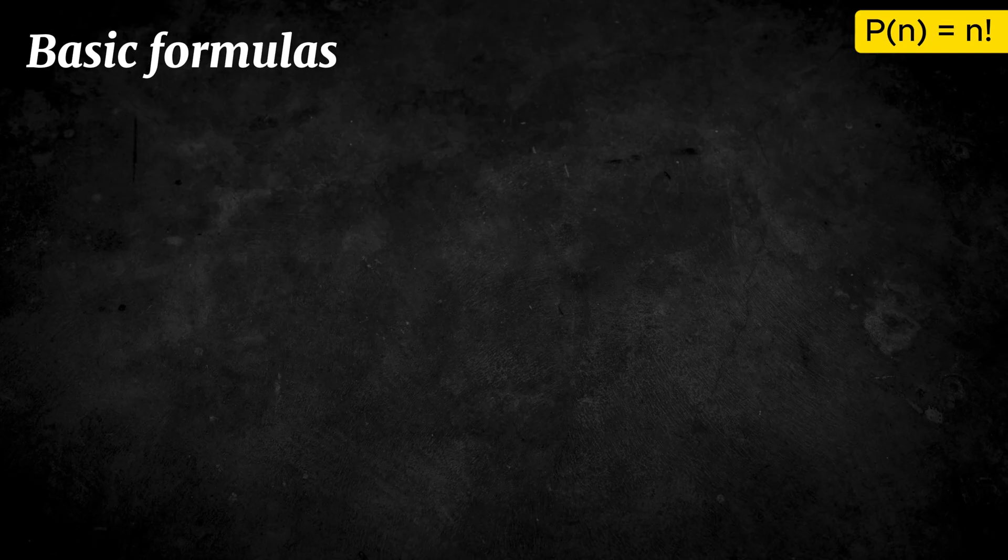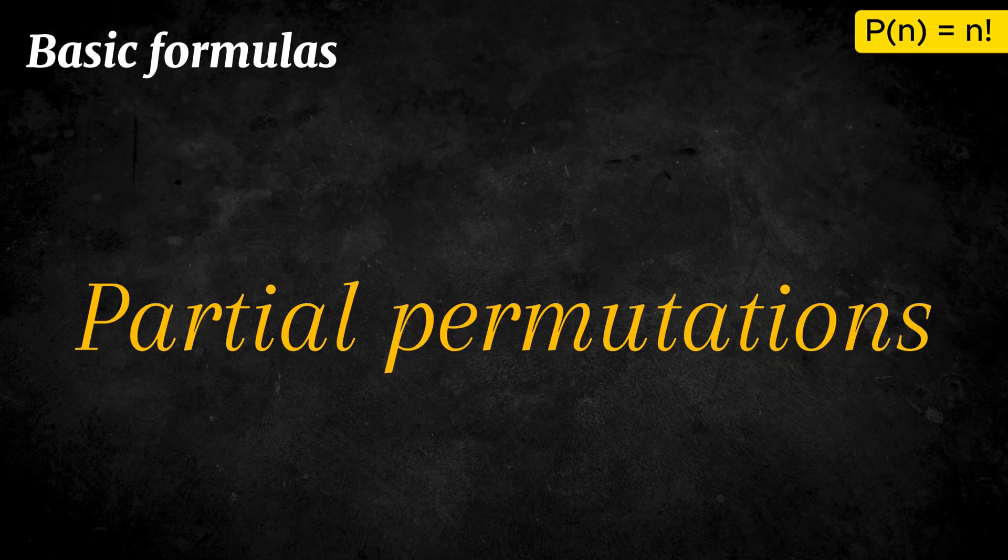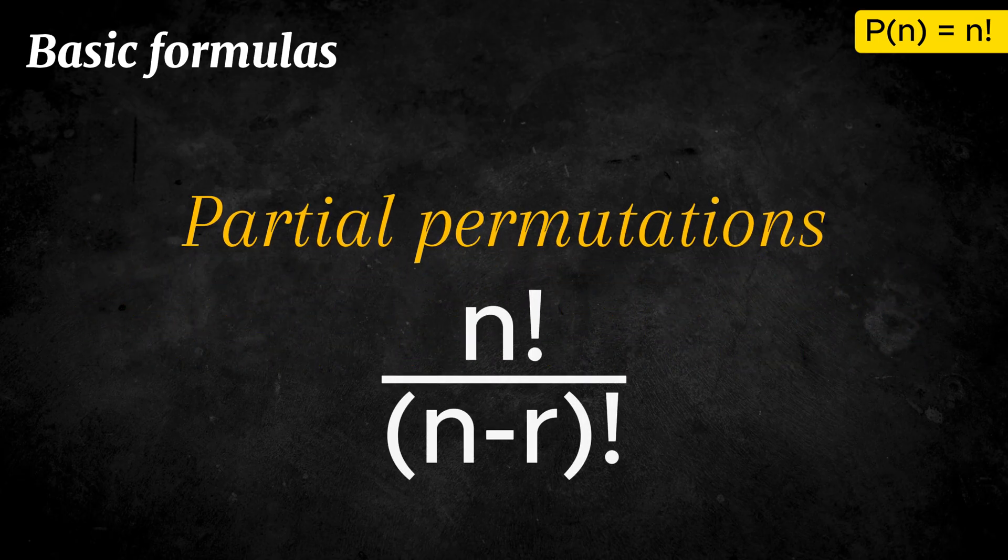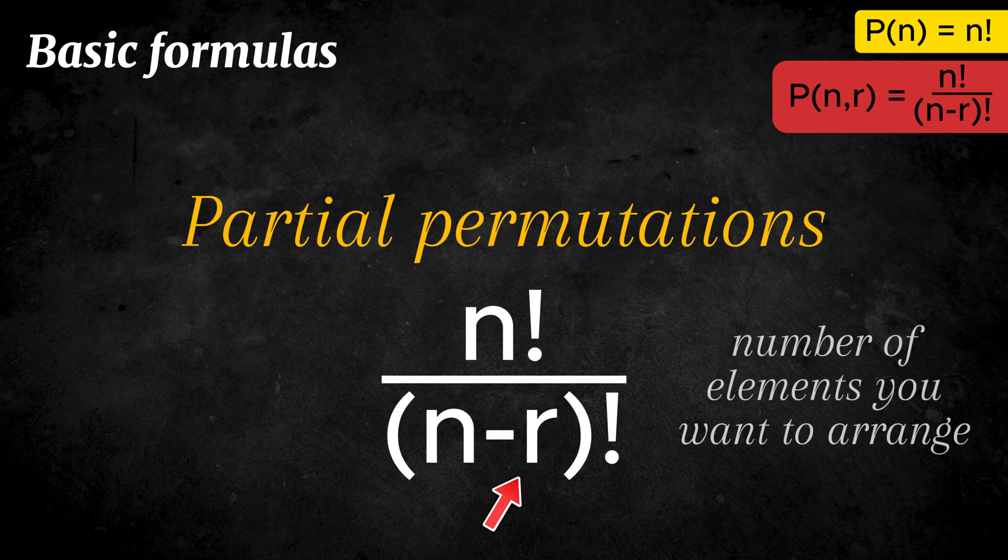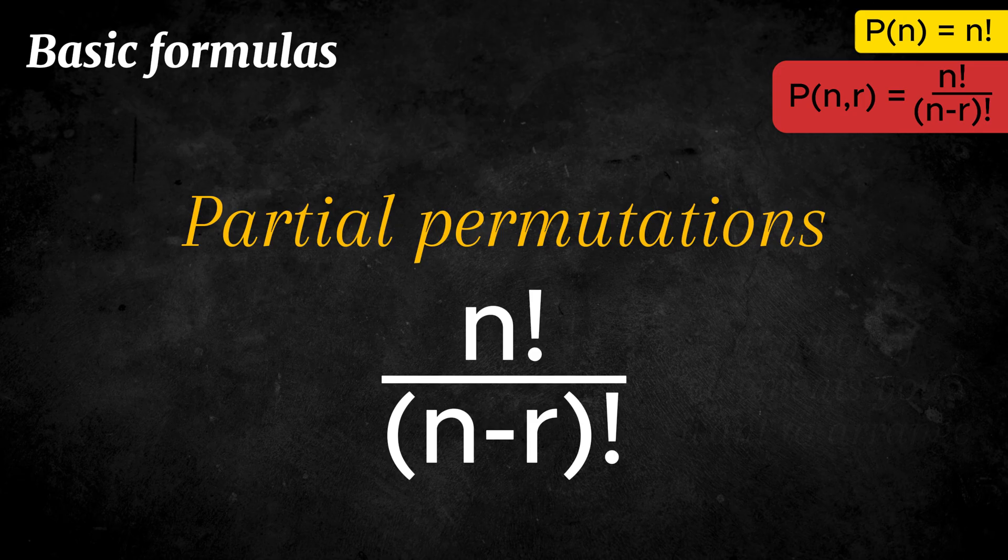If you only want to arrange some of the objects and not all of them, then you use the formula for partial permutations, which is n factorial divided by n minus r factorial. And the letter r stands for the number of elements you want to arrange. This helps us count sequences quickly without listing every possibility.